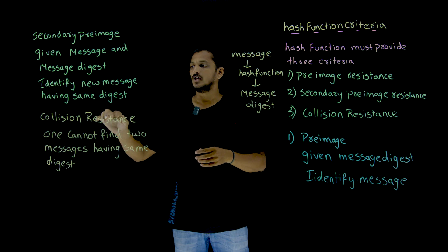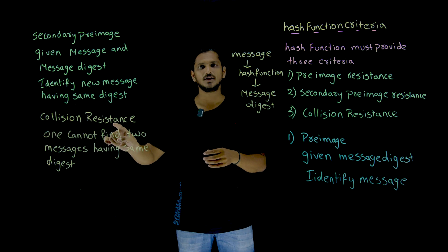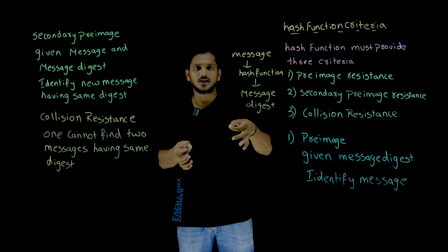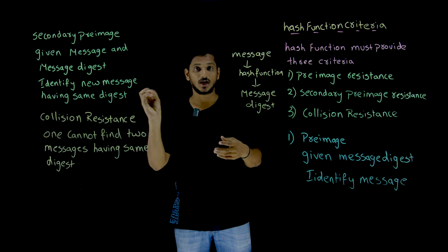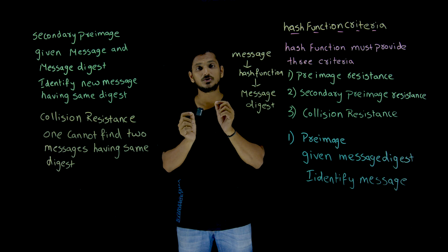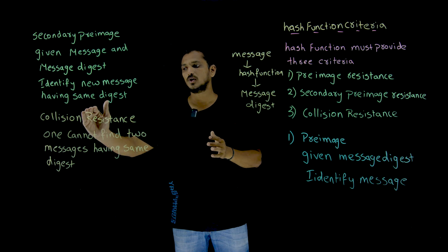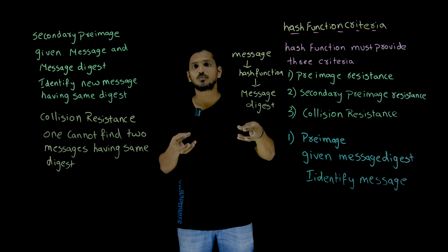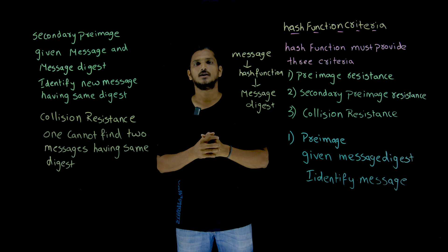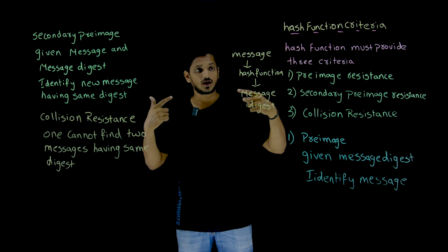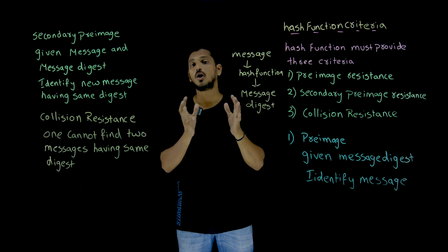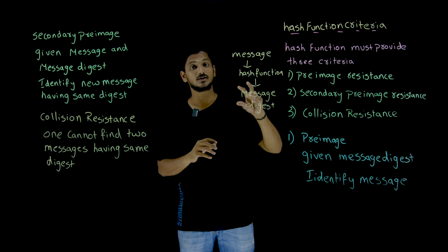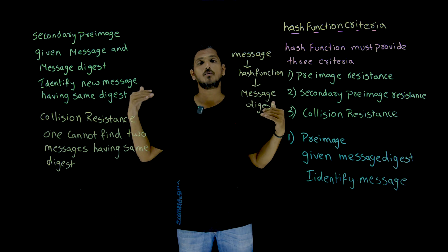Collision attack means nothing is given — just identify any two messages that produce the same message digest, so you can use one message as the original and send the second one to fraud someone. However, identifying two messages that give the same message digest is also not possible due to the exponential number of possibilities. So these are the three types of attacks — pre-image, secondary pre-image, and collision — and the hash function must be resistant to all of them. That is the complexity you have to provide, and when we discuss the hash function in coming classes you will see it is very complex to attack.